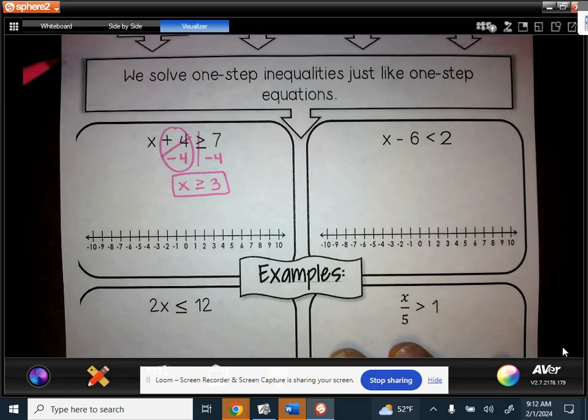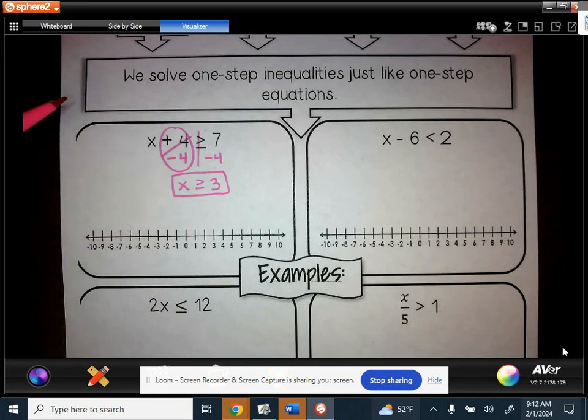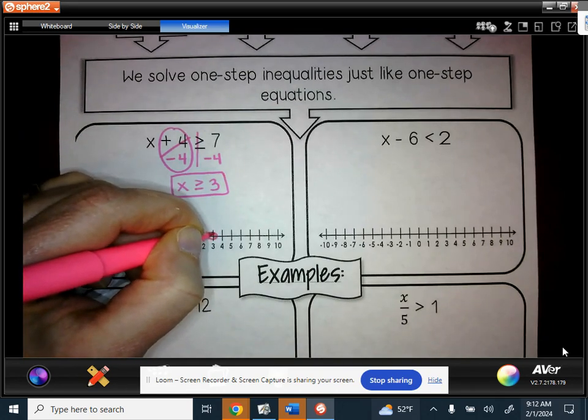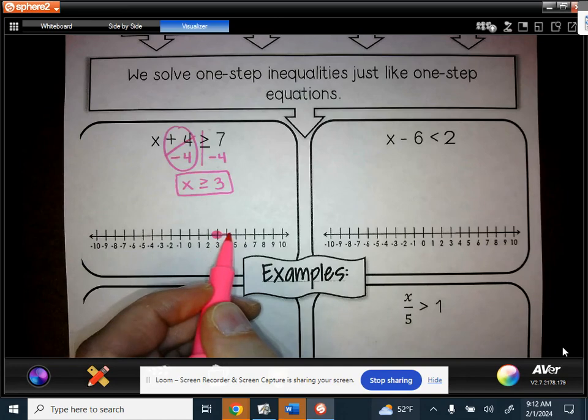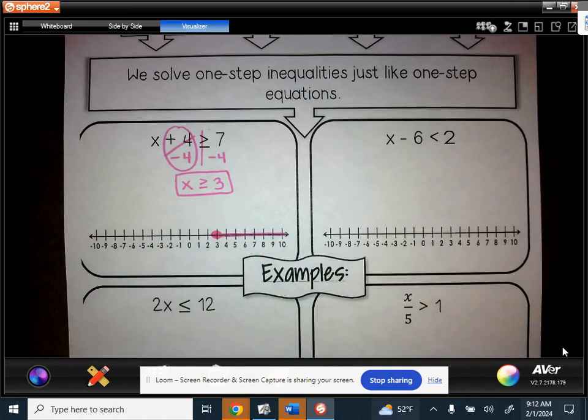And then we learned how to graph inequalities. So we're going to be graphing our solution set. So remember that if our symbol has a line under it, I have that saying, if it has a line, it needs a mouth guard because it does include 3. So you're going to draw a circle at 3, and you're going to fill it in. And then remember that this looks kind of like an arrow, and it's pointing that way. So you want to shade everything going that way because those are all the values that are either greater than or equal to 3.